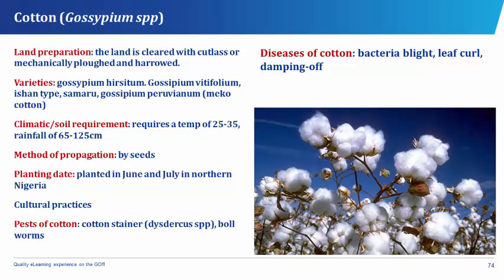Cotton has different varieties which include Gossypium hirsutum, Gossypium vitifolium, the Asian type, the Samaru, and Gossypium peruvianum or the Meco cotton. The climatic or soil requirement of cotton is a temperature of about 25 to 35 degrees centigrade and a rainfall of about 65 to 125 centimeters. The method of propagation of cotton is by seeds. The planting date of cotton is in June and July in Northern Nigeria. Cotton has weeding, fertilizer application, and mulching as its cultural practices.